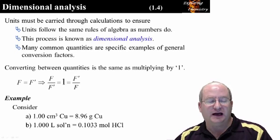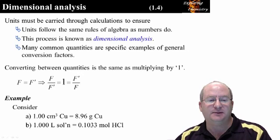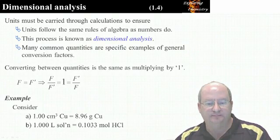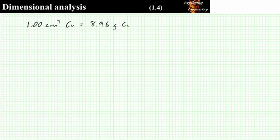Now we're going to look at example A, where the equality we have is that 1.00 cubic centimeter of copper equals 8.96 grams of copper. This equality applies only to copper. A different equality exists for lead, gold, carbon, and every other chemical entity.